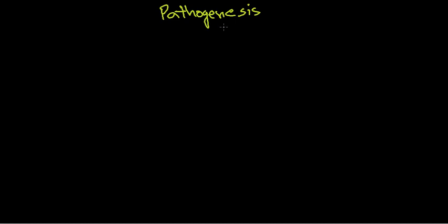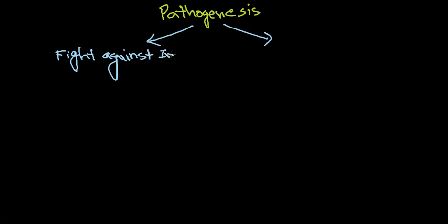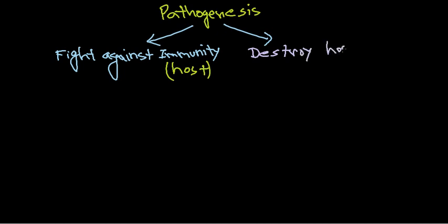When talking about pathogenesis, we look at two important features. Feature number one is to fight against immunity — or the host immune system. The second process is to destroy the host cell. These are the two different ways of pathogenesis in most bacteria we'll be studying. In the case of Staphylococcus species, to fight against or escape host immunity, there are majorly two different mechanisms available.